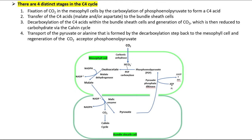There are four distinct stages in the C4 cycle: fixation of CO2 in the mesophyll cells by carboxylation of phosphoenolpyruvate to form a C4 acid; transfer of the C4 acids to the bundle sheath cells; decarboxylation of the C4 acids within the bundle sheath cells and generation of CO2, which is then reduced to carbohydrate via the Calvin cycle; and transport of pyruvate or alanine formed by the decarboxylation step back to the mesophyll cell and regeneration of the CO2 acceptor phosphoenolpyruvate.